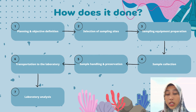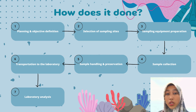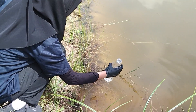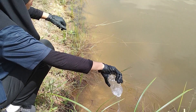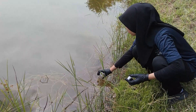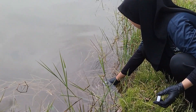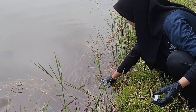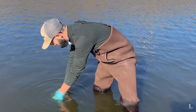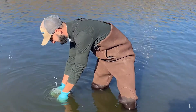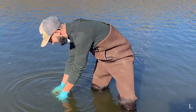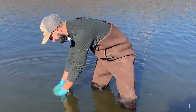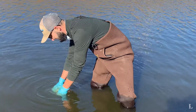Number four is sample collection. When collecting the water sample, it is essential to follow specific procedures to ensure accuracy and avoid contamination. The process typically involves rinsing the sampling equipment with the water to be sampled to avoid contamination from previous samples, collecting multiple subsamples at different depths or locations to get a representative sample of the entire body of water, and using appropriate techniques to prevent contact between the samples and the atmosphere.